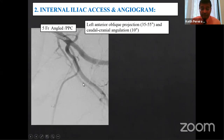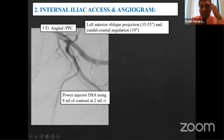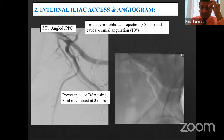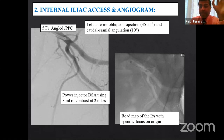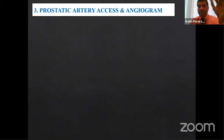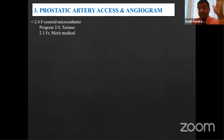We do a power injection run showing a good angiogram, then create a roadmap and identify the origin of the prostatic artery. Always use a microcatheter — never the base catheter — because prostatic arteries are very tiny. Microcatheters must be less than 2.4 French; larger than that will cause spasm because the artery is approximately 1.2–1.5 mm in diameter. My preference is 2.0 or 2.1 French Merit Medical microcatheters.